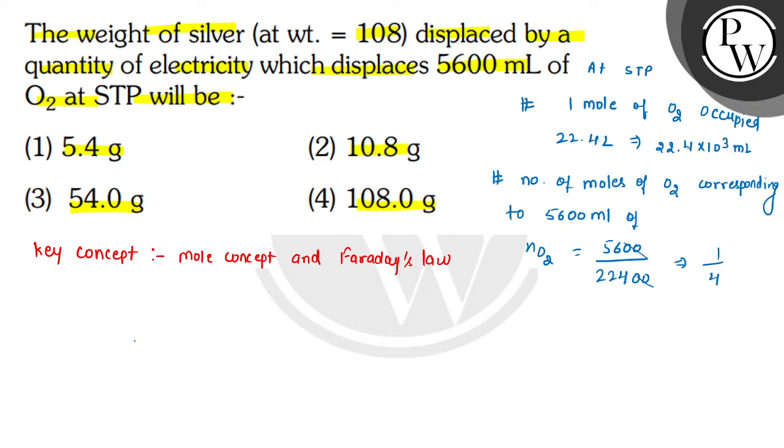Number of moles equals given weight divided by molecular mass. When silver is oxidized to Ag+ plus 1 electron, we need only 1 electron.